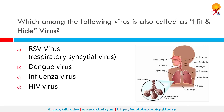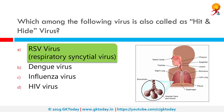Which among the following viruses is also called a hit and hide virus? The correct answer is RSV, or Respiratory Syncytial Virus. This is a common and very contagious virus that infects the respiratory tract of most children before their second birthday. For most babies and young children, the infection causes nothing more than a cold.